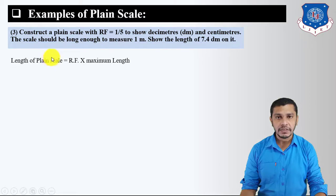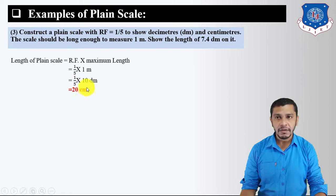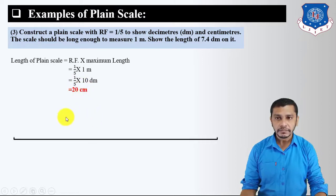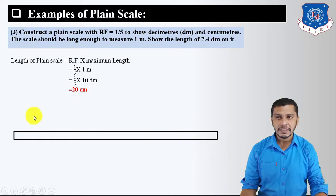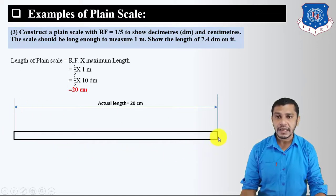The drawing length of the plane scale = RF × maximum length. Maximum length = 1 meter = 10 decimeters. RF = 1/5. So length = (1/5) × 10 decimeters = 2 decimeters = 20 centimeters. Draw a scale of length 20 cm. Divide this into 10 equal parts, so the drawing length of each part = 20/10 = 2 cm, representing 1 decimeter each.